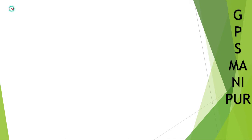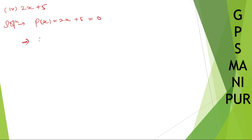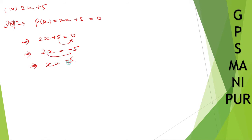So x = 0 is the zero of that polynomial. Roman number four: p(x) = 2x + 5. Setting 2x + 5 = 0, we get 2x = -5, so x = -5/2.